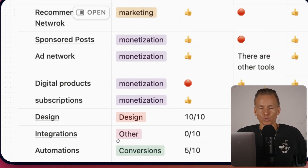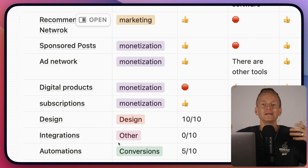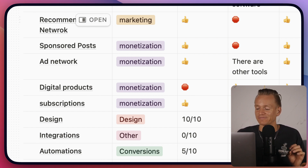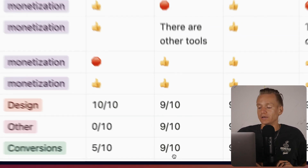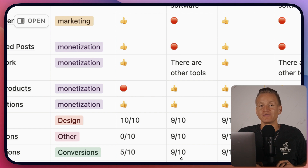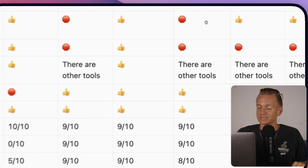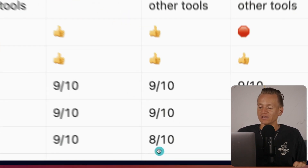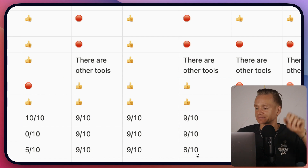Automations are really important for conversions. Whether you're promoting digital products or affiliate offers, automations help you make money on autopilot. MailerLite has really amazing automations — I give it a 9 out of 10. It has almost everything you'll need; the only reason it's not a 10 is that some other email marketing software goes even further. Mailchimp has a good amount of automations, but it's lacking a couple of basic triggers and steps, so I give it an 8 out of 10.